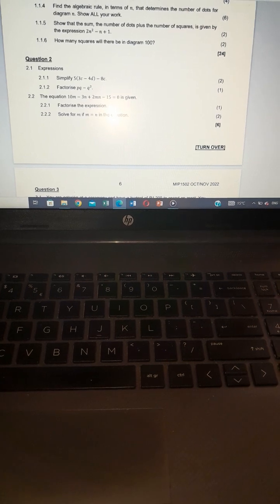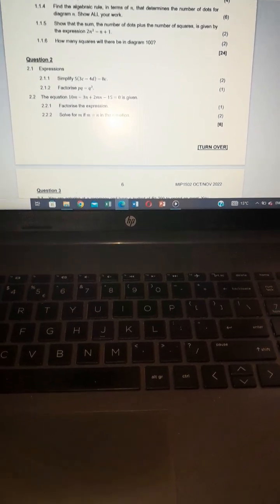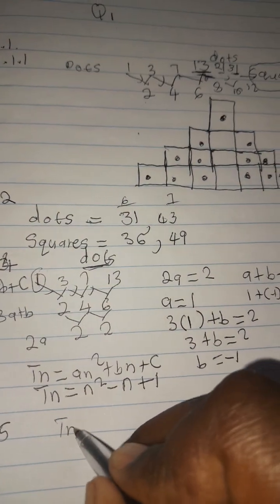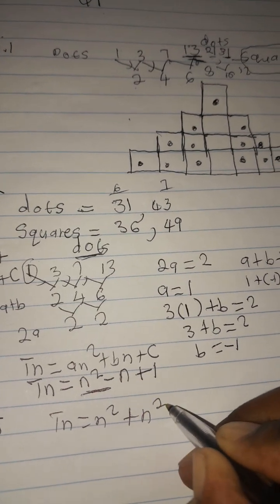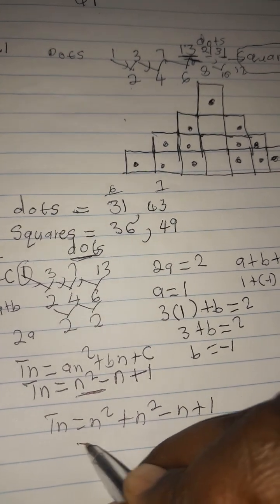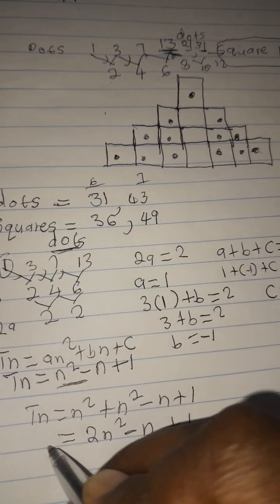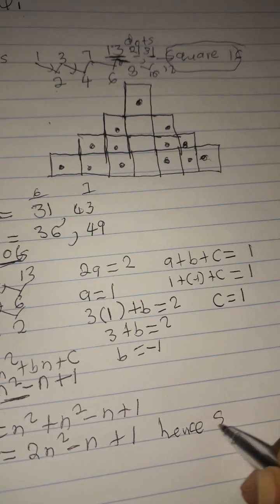For question 1.1.5, show that the sum of dots and squares is given by 2n² - n + 1. The general term for squares is n², and for dots it is n² - n + 1. Adding them: n² + (n² - n + 1) = 2n² - n + 1. Hence shown.